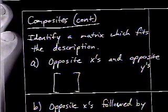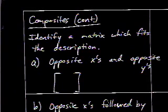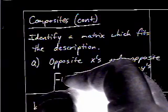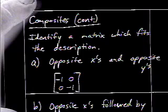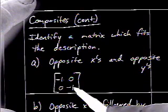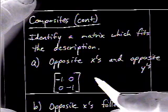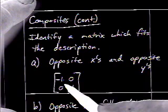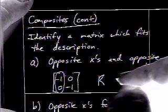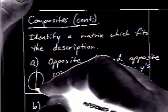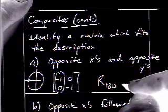We could also identify matrices from a verbal description. For 'opposite x's and opposite y's' — which matrix changes both x and y values? The resulting matrix is negative 1, 0, 0, negative 1. Let's see if it fits the rotation pattern: x, x, y, opposite y. It does. The first column gives us the name — where is (negative 1, 0) on the unit circle? That's R180.